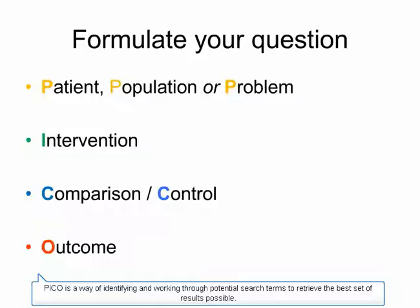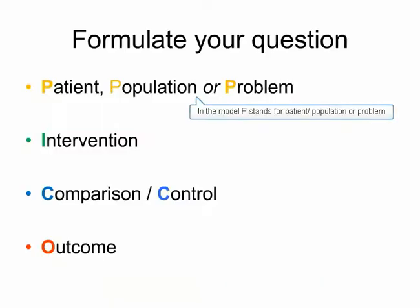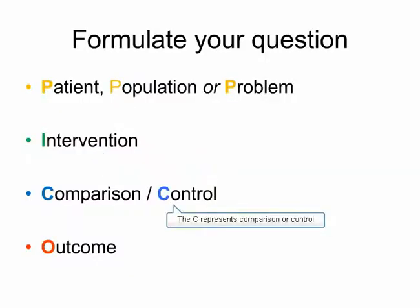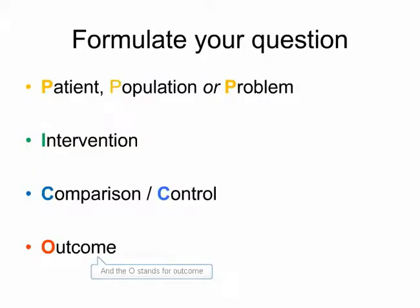PICO is a way of identifying and working through potential search terms to retrieve the best set of results possible. In the model, P stands for Patient, Population or Problem. The I stands for Intervention. The C represents Comparison or Control. And the O stands for Outcome.